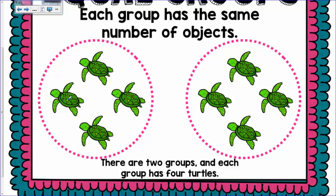You can do the repeated addition by just adding them together. 1, 2, 3, 4, 5, 6, 7, 8. There are 8 total turtles.